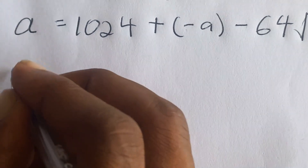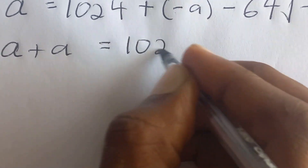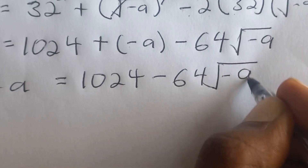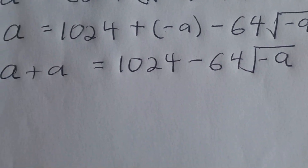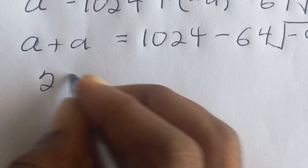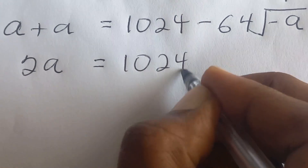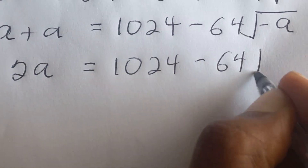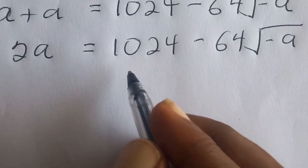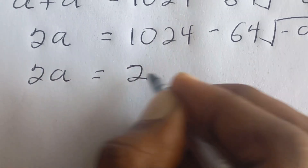So we get a plus a is equal to 1024 minus 64 times square root of negative a. Now a plus a is 2a, which is equal to 1024 minus 64 square root of negative a. We can factor out 2 from the right side to get 2 times 512 plus 32 square root of negative a.